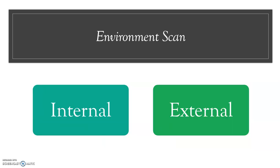Before we implement any initiatives, we have to conduct an external and internal scan. For our internal scan, we need to look at what students on campus desire a green initiative, how many faculty are willing to be part of the green campus committee, what the financial costs are for implementing sustainability initiatives, how those initiatives align with the university's mission, and how we can evaluate students' body of knowledge of sustainability.